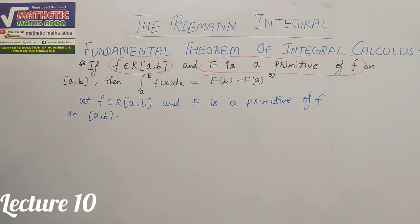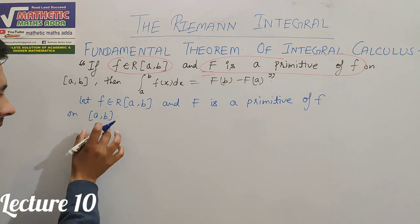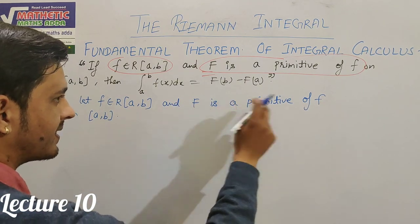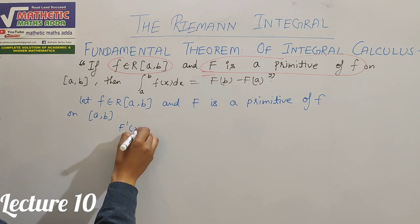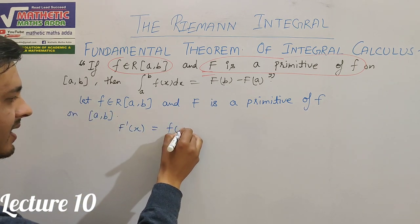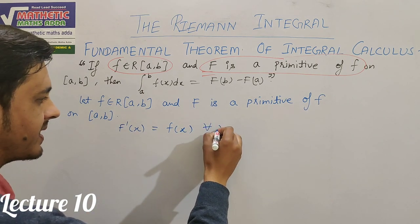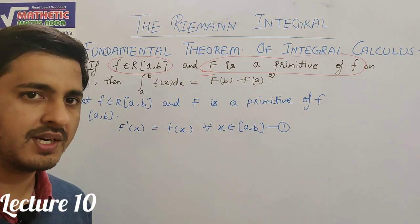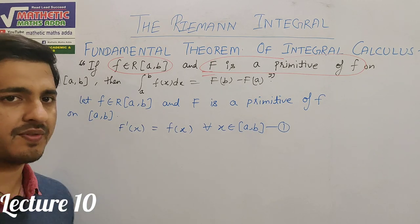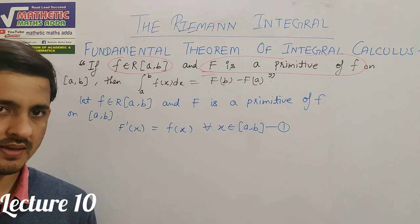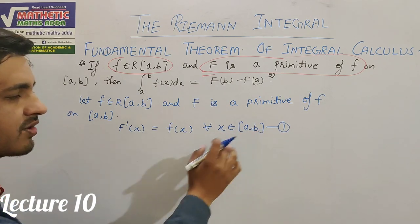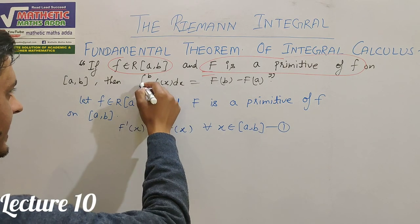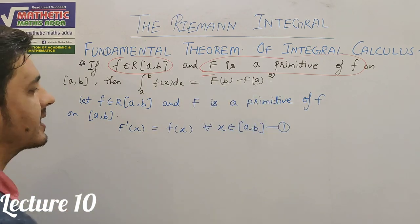Wherever you read the word 'primitive', you should first know that the interval must have bounded values. So if capital F is a primitive of small f, it means that if we differentiate capital F, it will equal small f — that is the meaning of primitive — for all x belonging to the closed interval [a, b]. This is given. So you have to prove that integrating small f(x) from a to b will equal capital F(b) minus F(a).